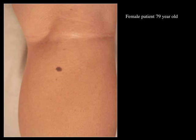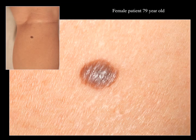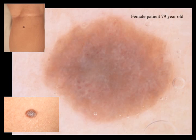Case number four. It's a 79 year old patient and this lesion is of unknown history. It seemed to grow recently. And this is dermoscopy — you have a few seconds to think about it.